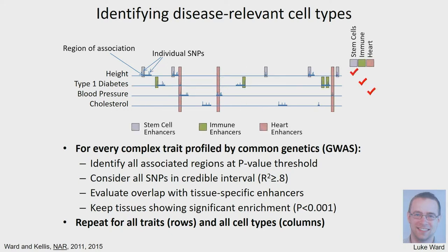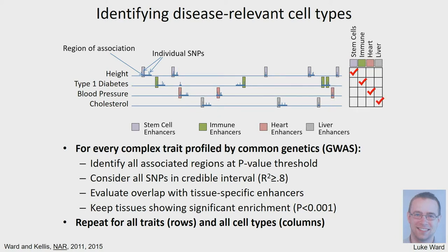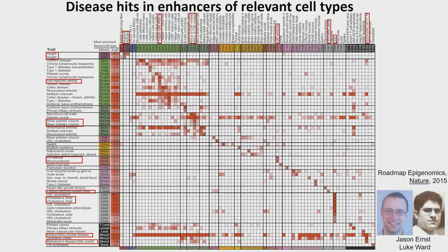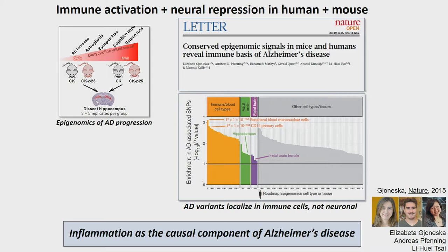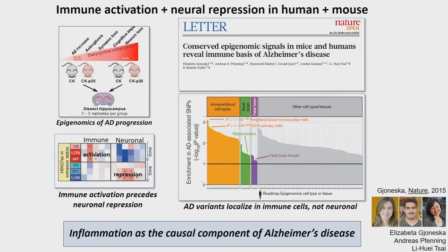We ask whether genetic variants are systematically localizing in regulatory control regions active in specific tissues. In many cases, they point to exactly the tissue we expect. In the case of Alzheimer's, we were surprised — we expected them to point to the brain, but they were not. Our brain samples were primarily neurons, but the variants instead pointed to CD14-plus immune cells — the signature of macrophages in circulating blood and microglia inside our brains, the resident immune cells of the brain. This tells us Alzheimer's is primarily an immune disorder of the brain's immune cells, and only secondarily do we see effects in neurons.